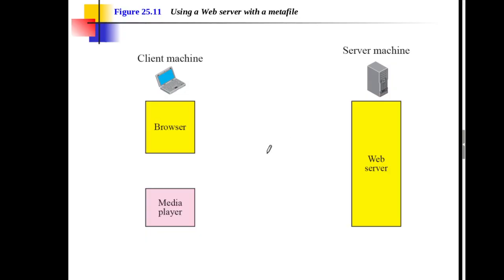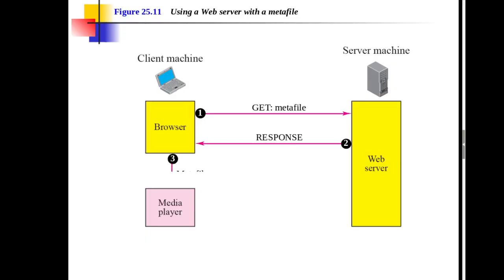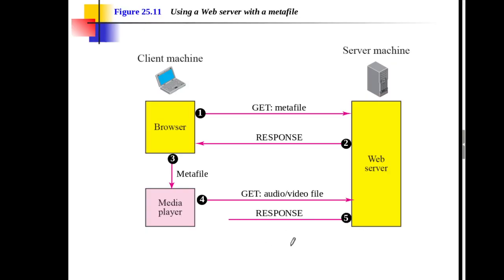The second approach uses a web server with a meta file. In this case, the media player can directly interact with the web server. The browser requests the meta file only, receives it as the response, and passes it to the media player. The media player then requests the actual audio/video file from the web server. The meta file contains information about the audio/video file, and the web server responds with it.